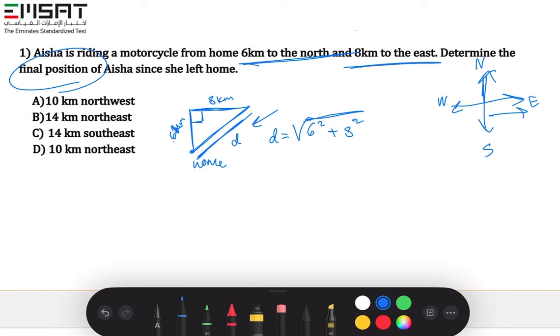Six squared is gonna be 36, plus eight squared is gonna be 64. Equals 36 plus 64 is gonna be 100, the square root of 100 is 10.